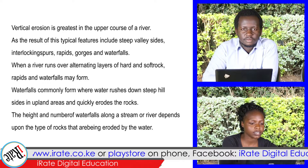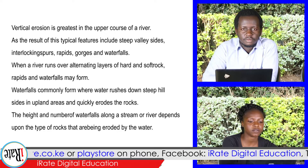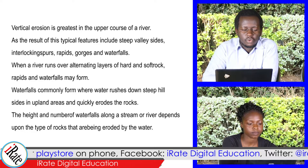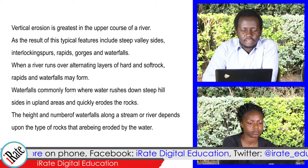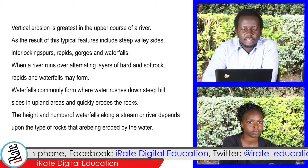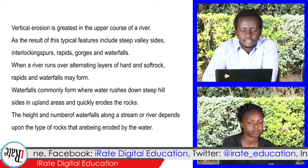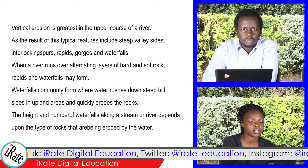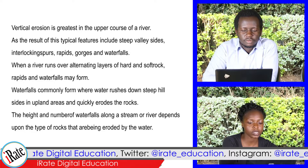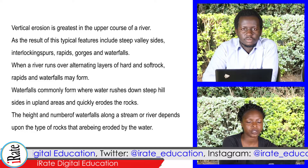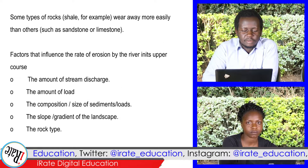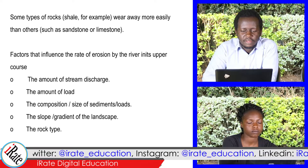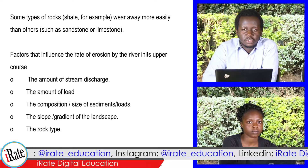When a river runs over alternating layers of hard and soft rocks, rapids and waterfalls may form. Waterfalls commonly form where water rushes down steep hillsides in upland areas and quickly erodes the rocks. The height and number of waterfalls along a stream or river depends upon the type of rocks being eroded by the water. Some types of rocks, shale for example, wear away more easily than others such as sandstone or limestone.